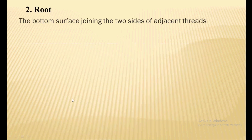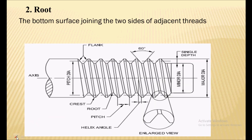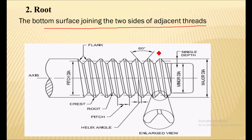Next is the Root. Root is the bottom surface that joins two sides of adjacent threads. Root is the bottom surface which joins the two adjacent threads. That is called as root.